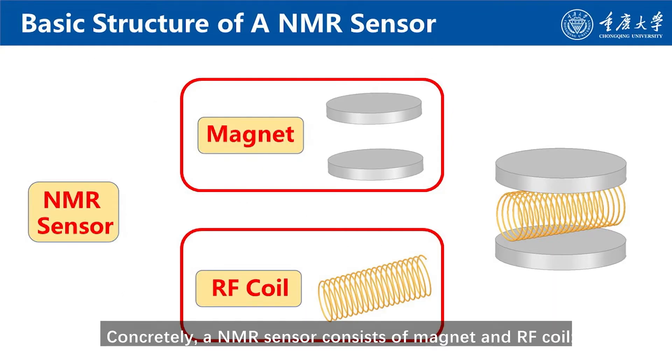Concretely, an NMR sensor consists of a magnet and a radio-frequency coil. The magnet generates background static magnetic field, and the RF coil excites the sample and receives NMR signal.